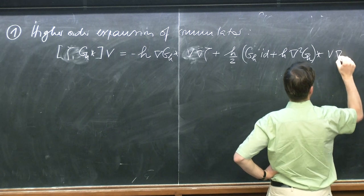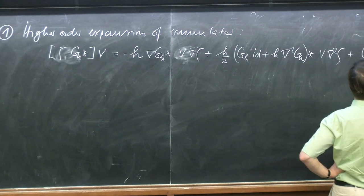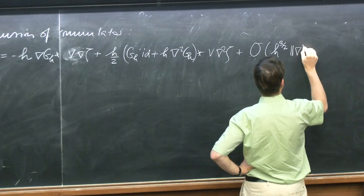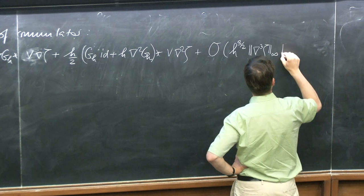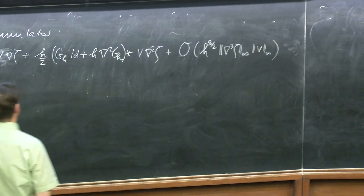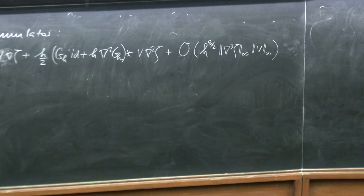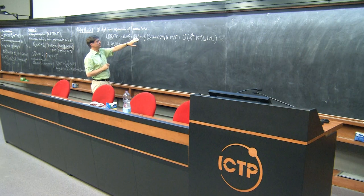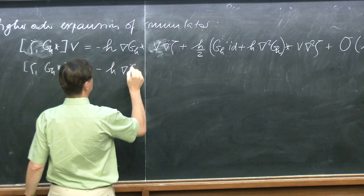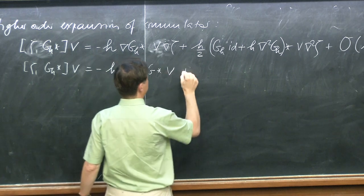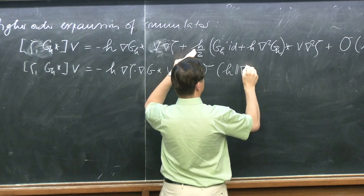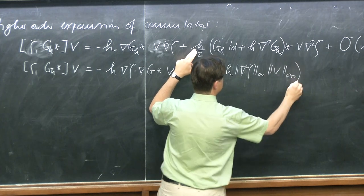We organize this differently by pulling the gradient of ζ out of the convolution, getting order h times second derivatives of v in L∞. That's elementary calculus, very much like what we did before when looking at the commutator, writing it out. The only additional feature is that because we're dealing with the heat kernel, we have some explicit formulas.